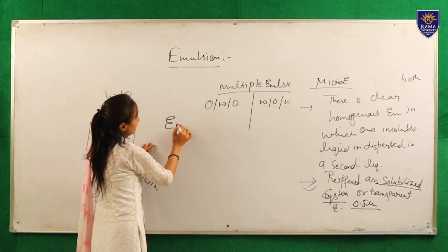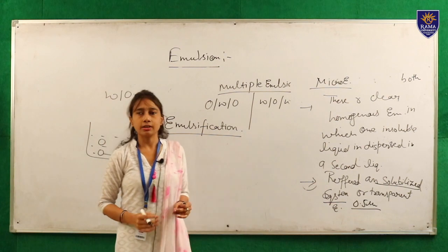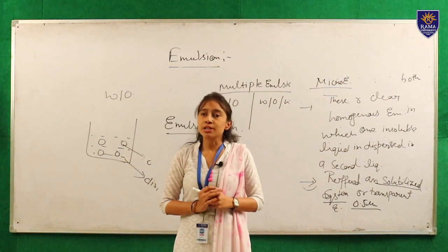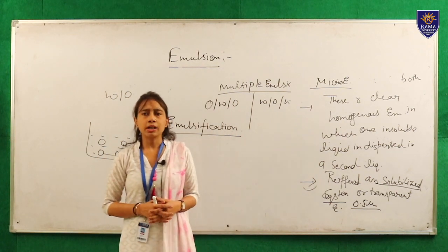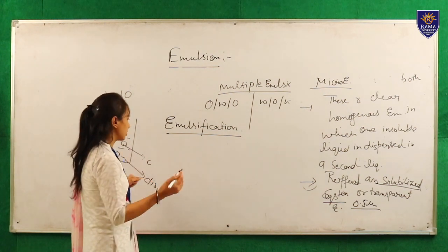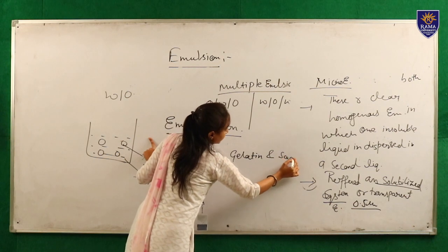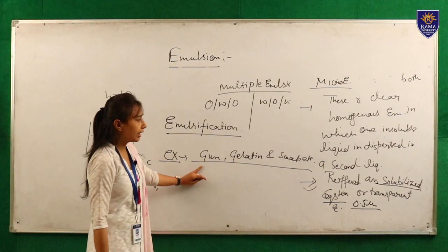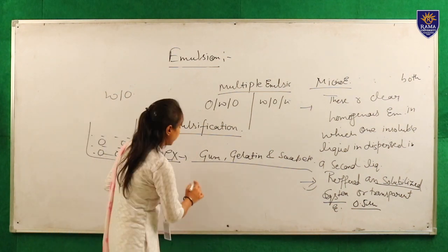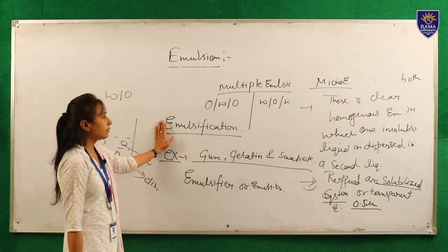Now moving to emulsification. Emulsification is a process that forms a stable emulsion. Since emulsions are unstable — the two immiscible liquids separate out when left standing — a small quantity of certain ingredients must be added to form a stable emulsion. Examples include gum, gelatin, and soap. These are called emulsifiers or emulgents.